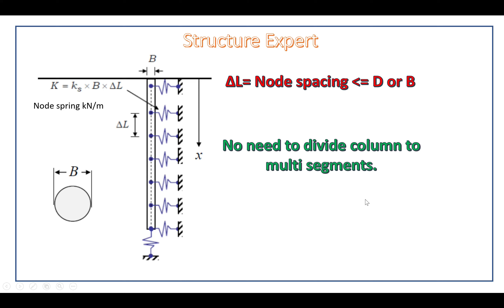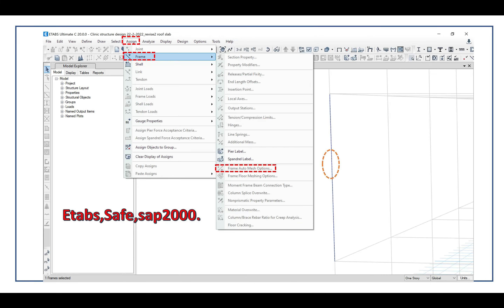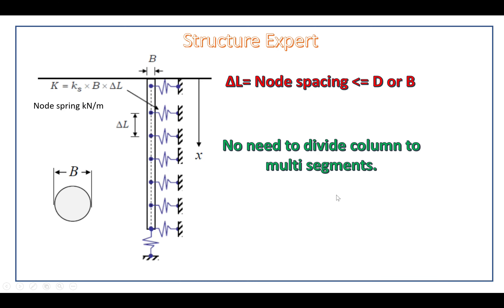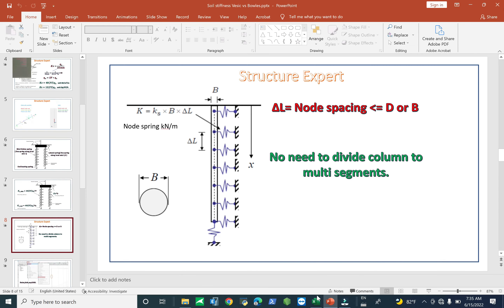In S-TAP, you do not need to divide the column into multiple segments. You can assign the frame automate option. Now let me review about this formula in detail.